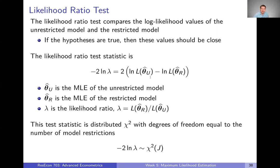To conduct the test, estimate both the unrestricted model (subscript u) and the restricted model (subscript r), then calculate the log likelihood of each one. The test statistic is simply two times the difference of the log likelihoods. It's called the likelihood ratio test because it can also be expressed as the log of the ratio of the likelihood of the unrestricted model to the likelihood of the restricted model. That test statistic is distributed chi-squared with degrees of freedom equal to the number of model restrictions J. Calculate the test statistic, find the chi-squared critical value, compare the two, and determine whether to reject or fail to reject the hypotheses.